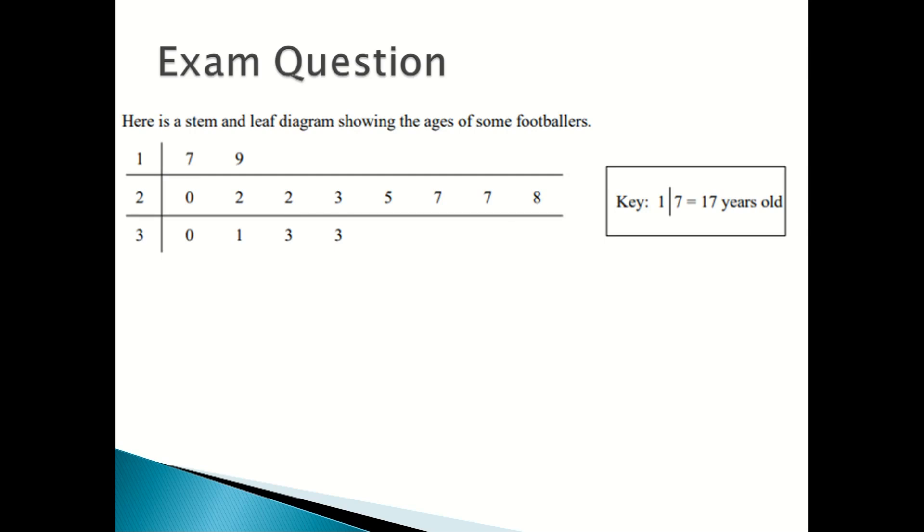So we have 17, 19, 20, 22, 22, 23, 25, 27, 27, 28, 30, 31, 33, and 33. These are the ages of some footballers.